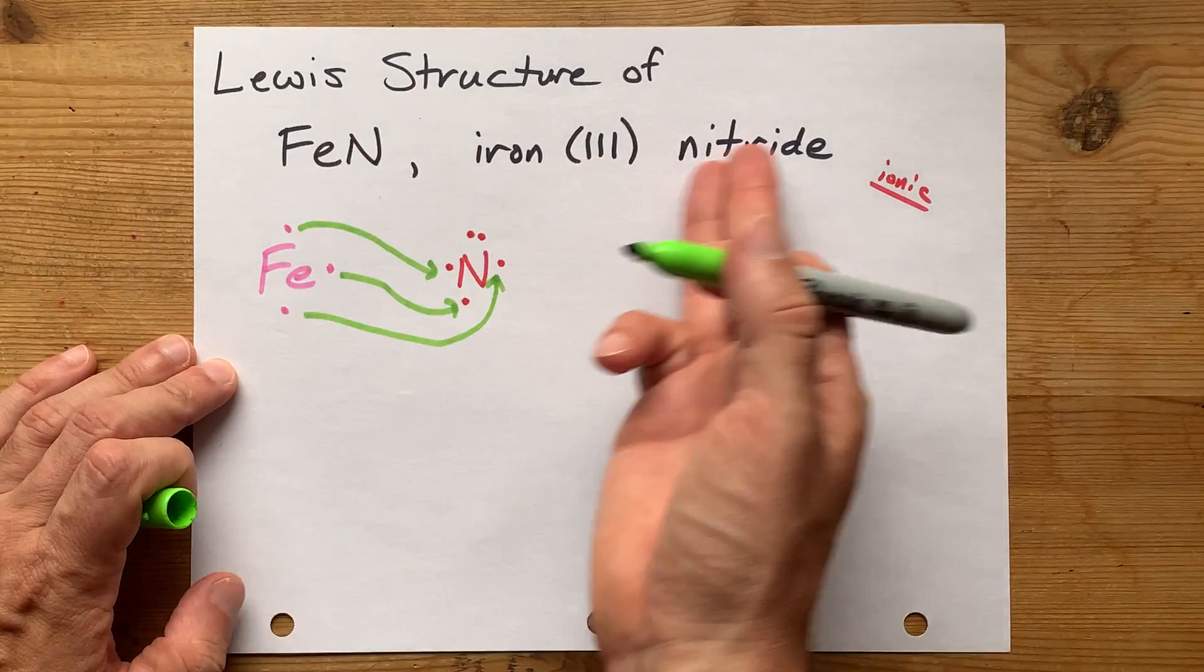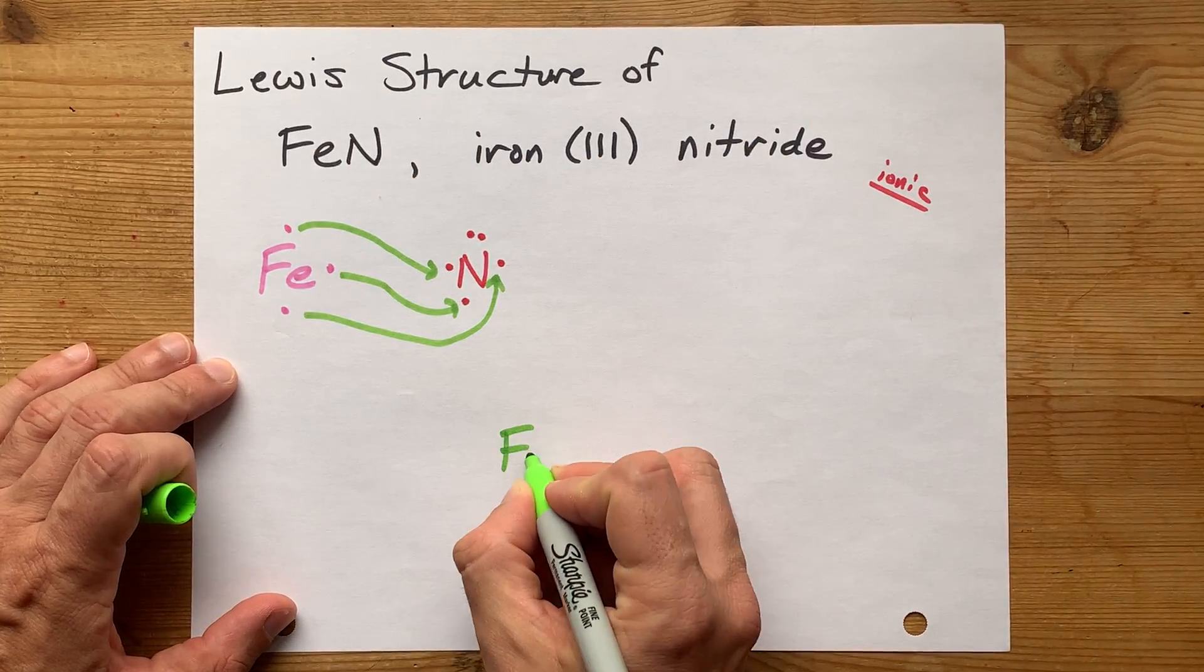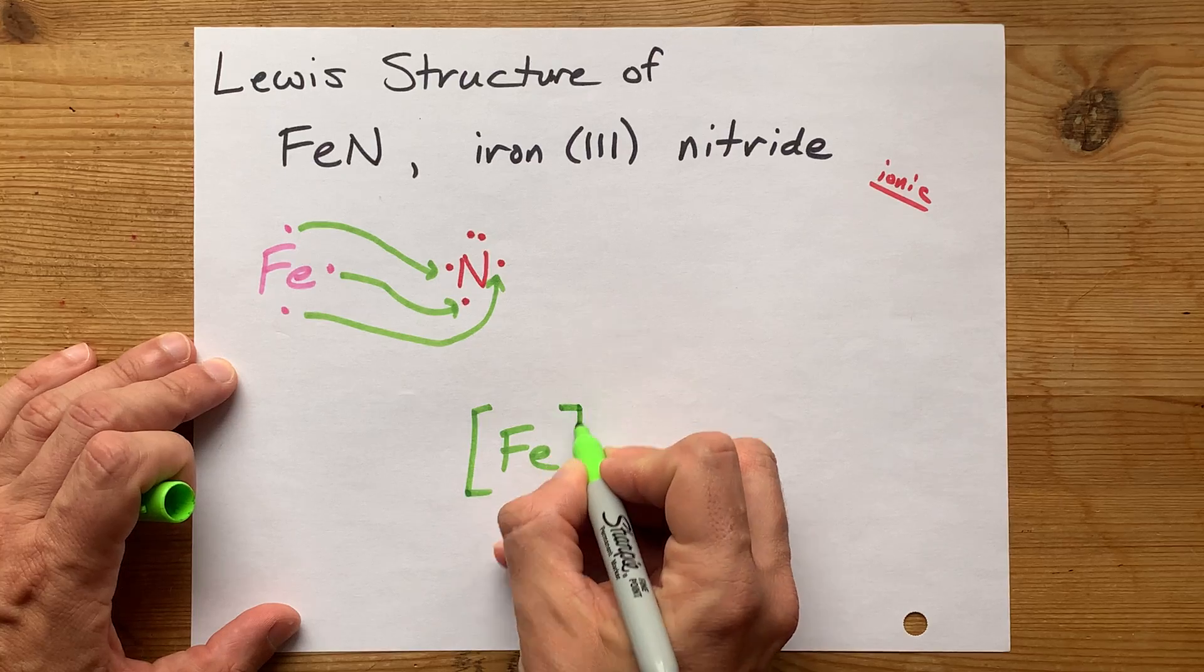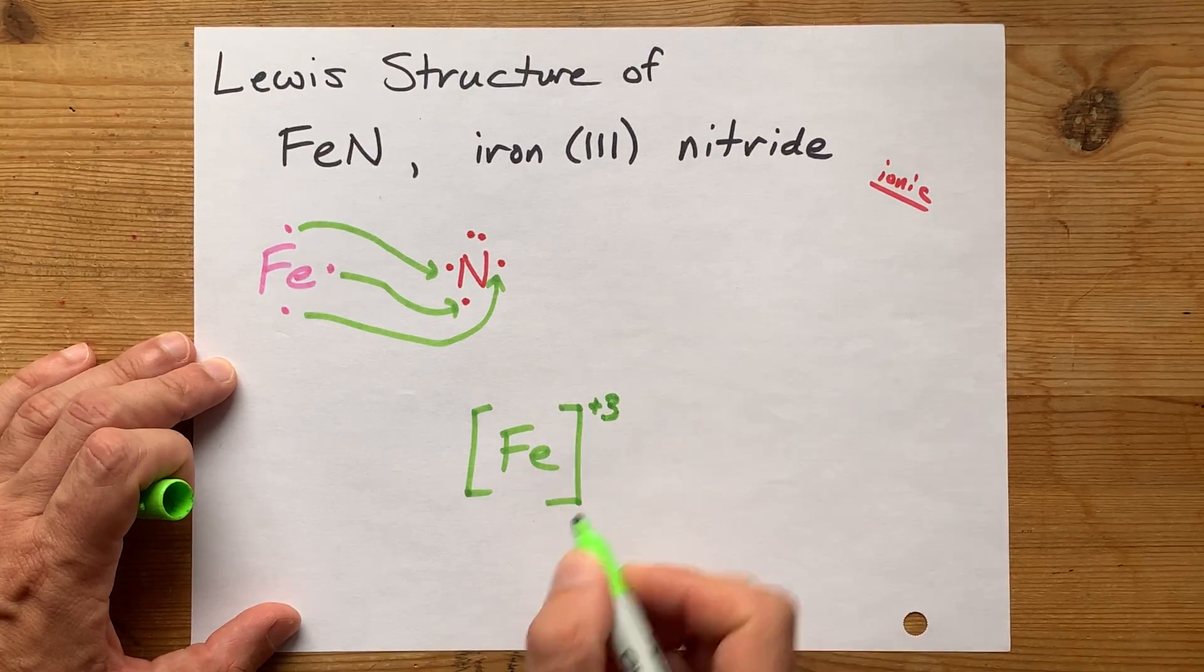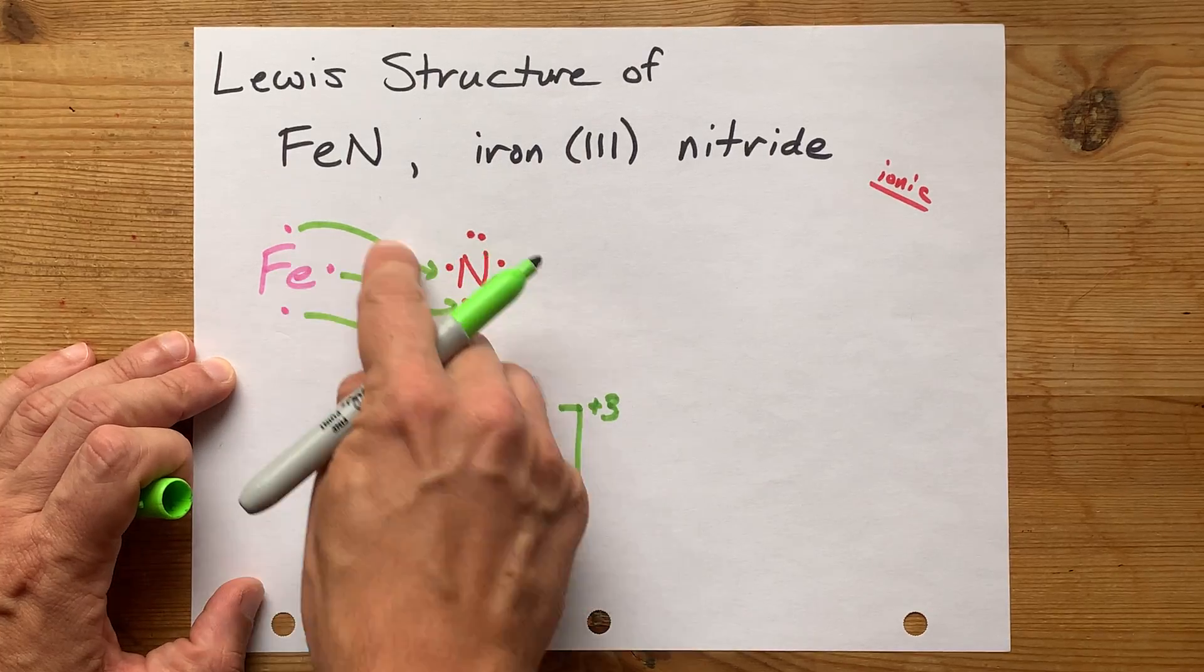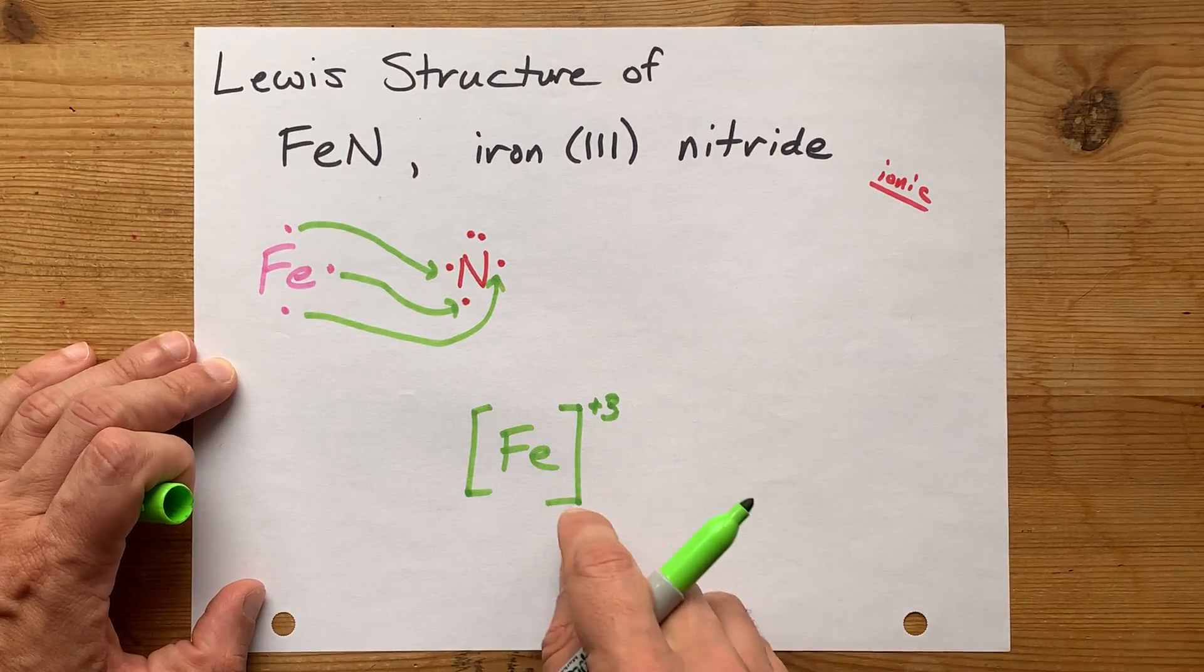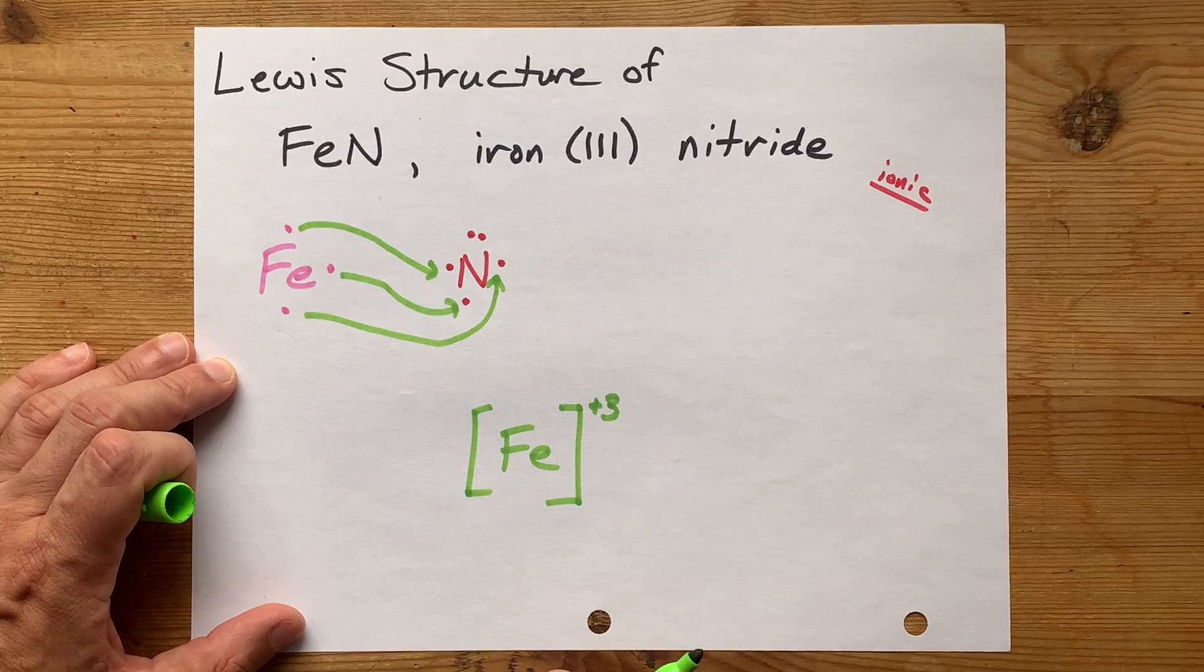The complete Lewis structure for iron III nitride is an Fe ion with no valence electrons shown, and a plus 3 charge because you lost 3 negatively charged electrons. Losing negatives makes you plus.